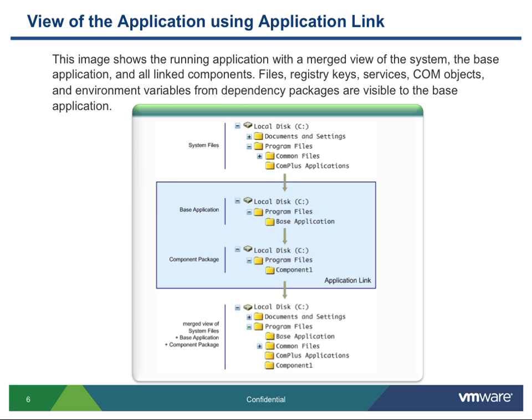When we look at the way the application actually interacts with the dependent ThinApps, we see that the file system, registry keys, services, COM objects, and even environment variables of the dependent package are simply made visible to the primary. The primary application, or base application, as well as the AppLink application or component package, can seamlessly provide a single pane of glass that shows both the virtual file system, registry, and objects of the primary app as well as the dependent applications.